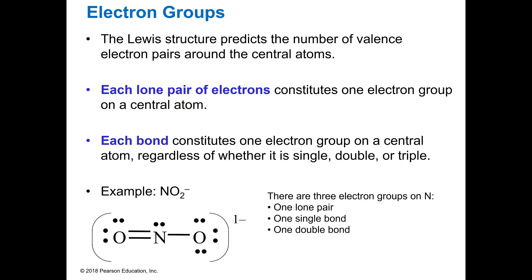If you have a lone pair, that's one electron group. So a lone pair that's not being shared with anything is one electron group. Each bond is going to be one electron group. But it doesn't matter if it's a single, a double, or a triple bond. That's one group.